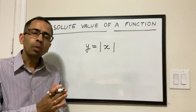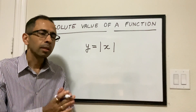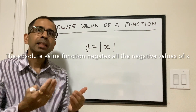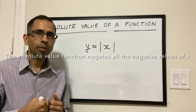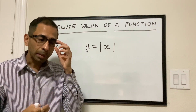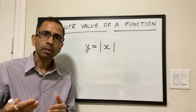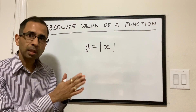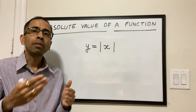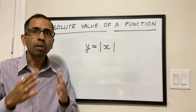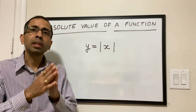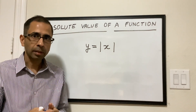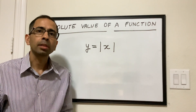An absolute value function is essentially the function which removes or negates the negative sign of x. What I mean is that when x is positive, y will continue to be positive with the same value, and when x is negative, y will just remove the negative sign keeping the same value. That's what the absolute value function does.